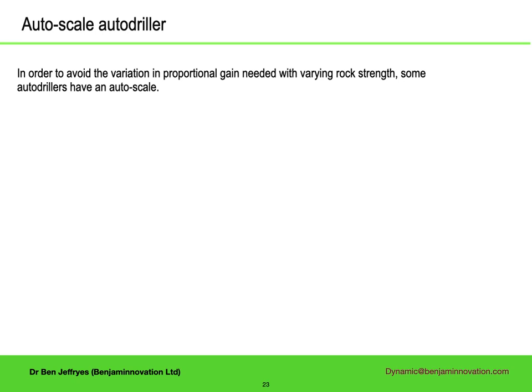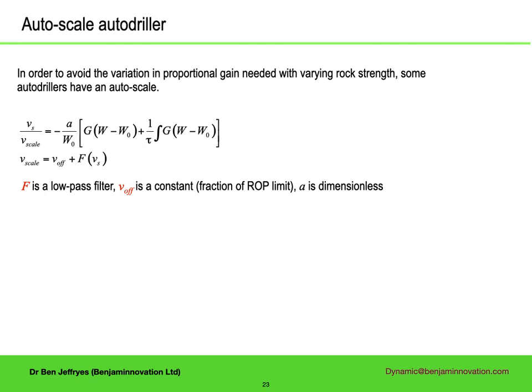One of the issues with autodriller behaviour is that the behaviour can change suddenly when the rock changes and the rock drillability changes. There are autodrillers that try and adjust for this, using a form of autoscaling. In this form of the controller, everything is normalised — the weight terms on the right are normalised with respect to the desired weight W0. Normally, autodrillers will switch from weight control to speed control if the velocity is too high, so there is a user-determined maximum ROP. The surface velocity is normalised with respect to a scaling velocity which is an offset — a fraction of the maximum ROP setting for the autodriller — and some average of the past surface velocity, i.e., a low-pass filtered version of the surface velocity.